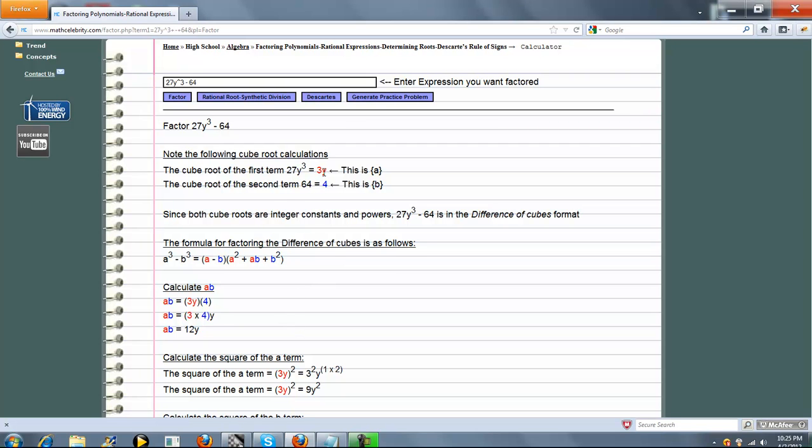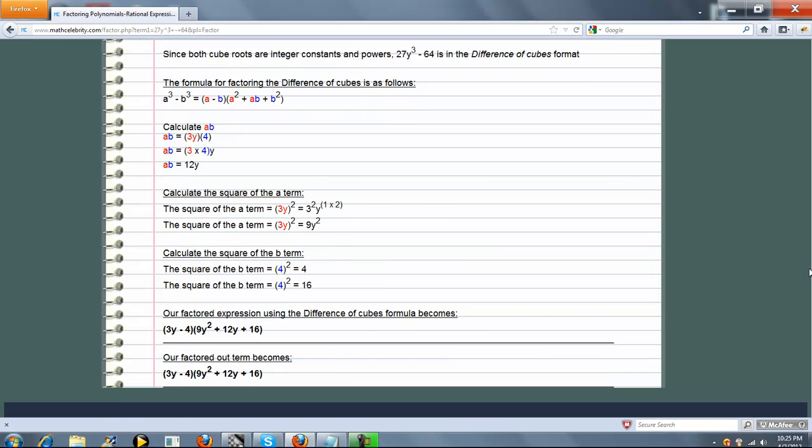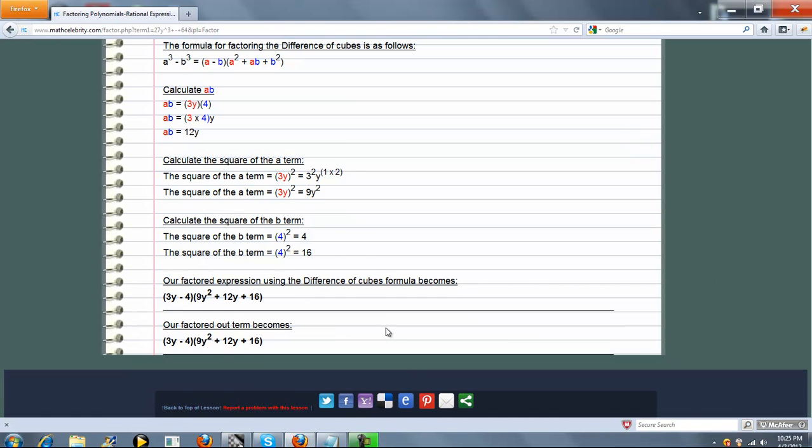With a equal to 3y and b equal to 4, we're going to plug in our numbers. So ab is just 12y, a squared is 9y squared, and b squared is 16. Plugging that information in, we get this. So we have a shortcut formula for the difference of cubes, which is great.